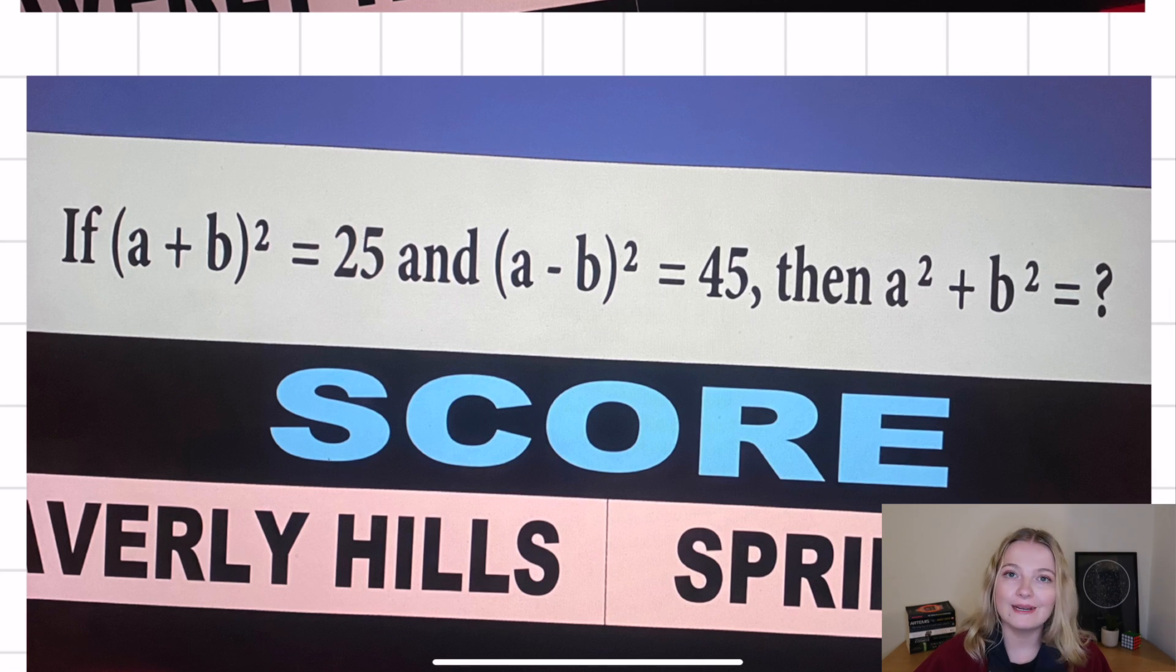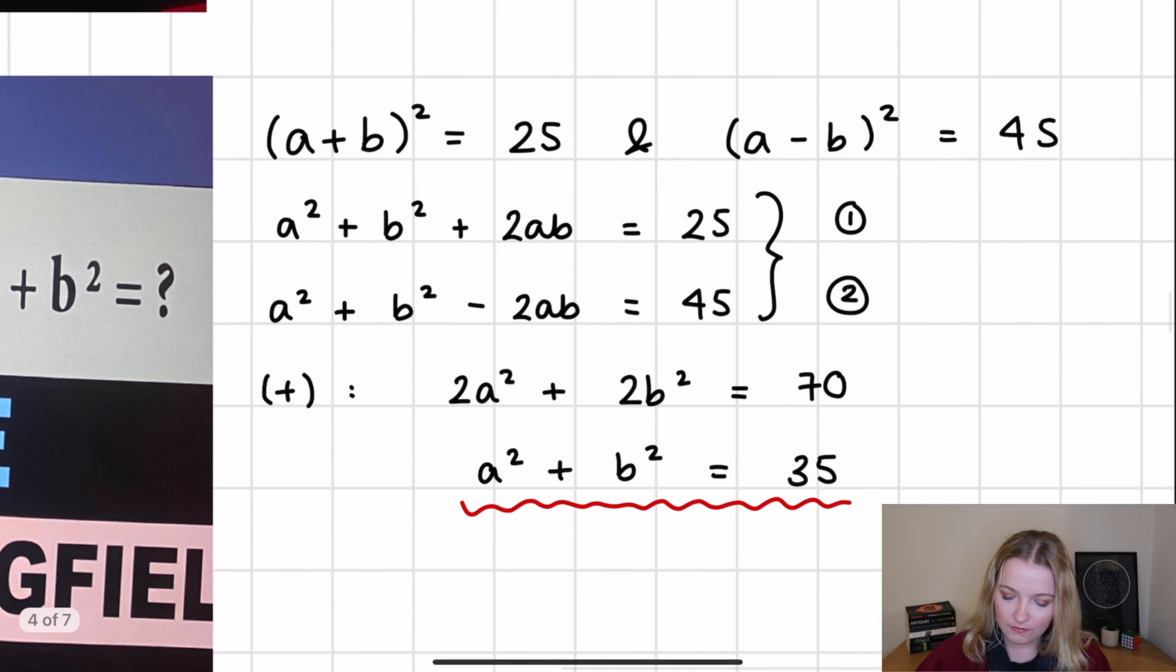We then have this question, which I really, really like. It's basically saying that we have a plus b squared equals 25 and a minus b squared equals 45. So what is a squared plus b squared? And the solution to this, I think is really neat. Personally, all I did was I wrote out what we had originally, which is what I've just said. So a plus b squared equals 25, a minus b squared is 45. You can expand both of these out, which is what I've done here to get equation one and equation two. And then if you look closely, we have these two terms here, which will essentially cancel out if we add them together, leaving us with two lots of a squared plus two lots of b squared. And obviously, the question is asking for a squared plus b squared. So all we do is divide by two and we get the answer, which is a squared plus b squared equals 35, which, yeah, I also really like this question as well.